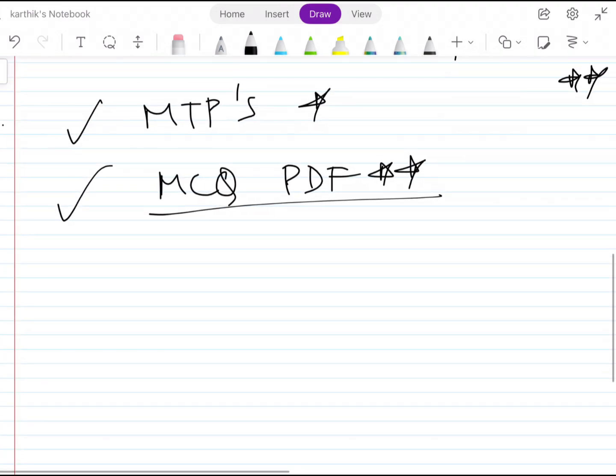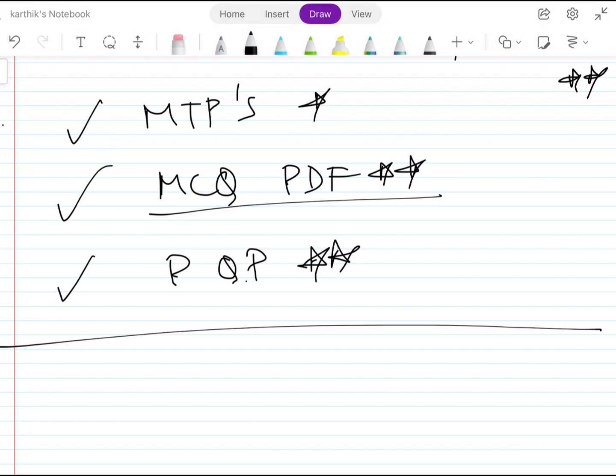Now, the previous question papers are very important. After studying the previous questions, practice them thoroughly. If you follow this plan, one student can easily score 60 plus marks. So, CMAID followers, this is your study plan. Thank you.